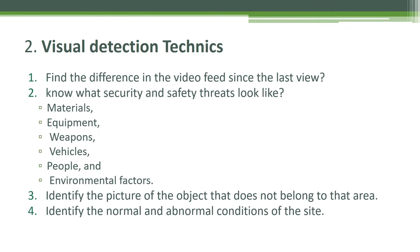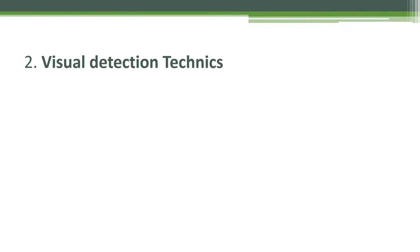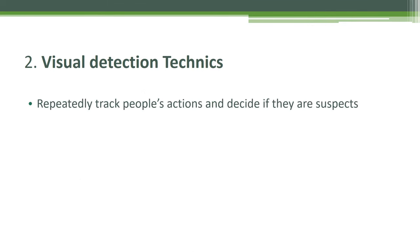Number four, identify the normal and abnormal conditions of the site — determine what is normal and what is abnormal. Other visual detection techniques: repeatedly track people's actions and decide if they are suspects. First, scan — check the visual picture using available visual detection techniques in the control room and scan people. Identify if anything is missing from several locations where items may be placed.